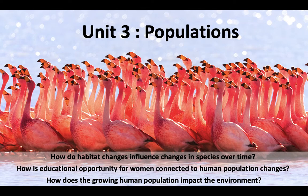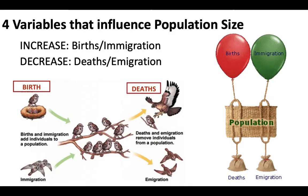Before we can start diving into these questions, you need to understand a couple basic facts about populations in nature. The first is that there are four main variables that influence population size — we hinted at this with island biogeography theory. Things that increase a population are births and immigration, and things that decrease a population are deaths and emigration. A population could be as small as a group of birds on a tree, or as large as the entire Earth.